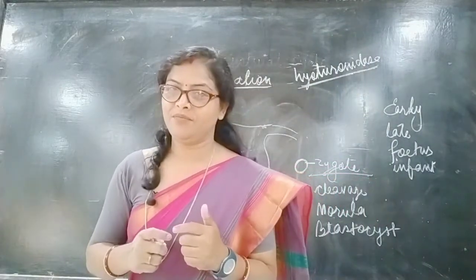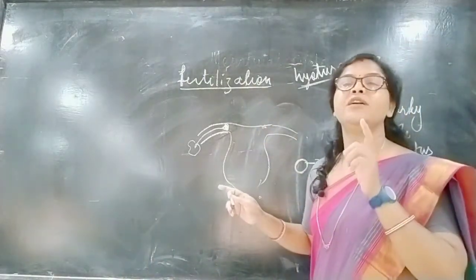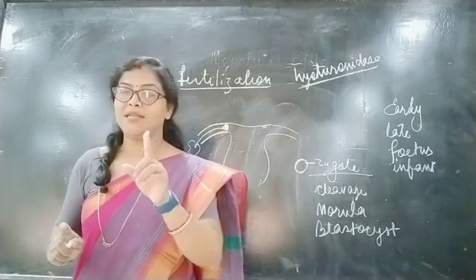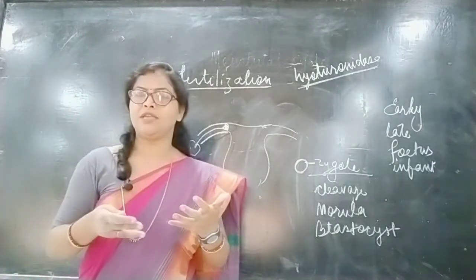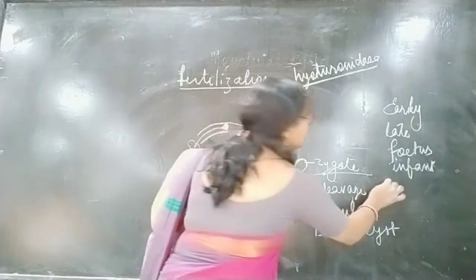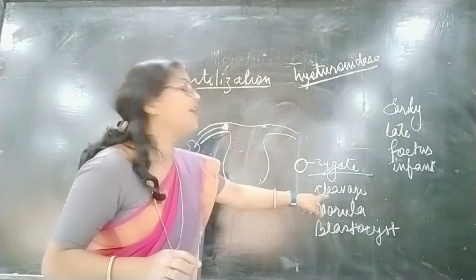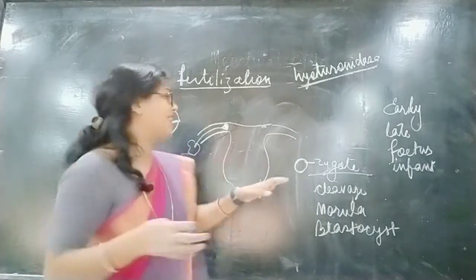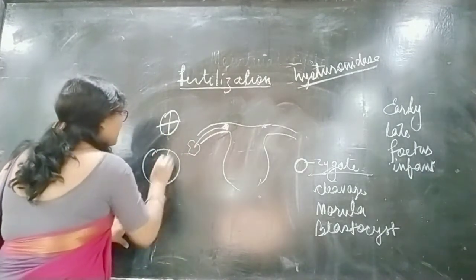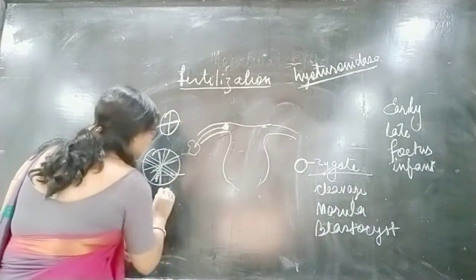Let us understand how these phases occur. The zygote is the first cell of the baby after fertilization. Then cleavage starts — cleavage means division in the cell, very rapid division. When the cell divides, this phase is called cleavage. Then they reach the morula stage. When the division reaches around 32 cells, this phase is called blastocyst.